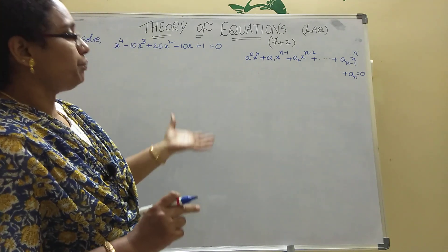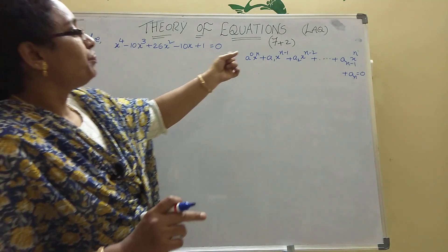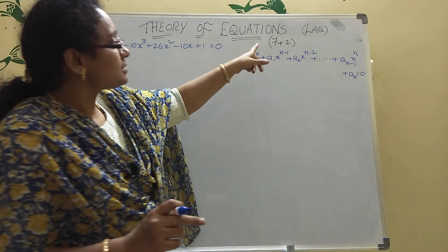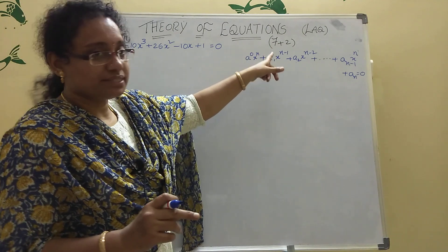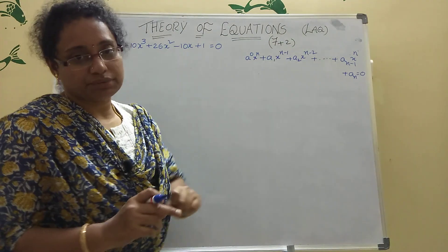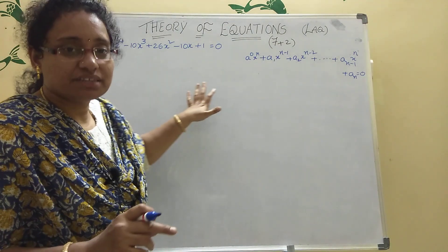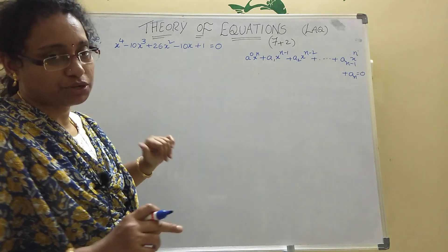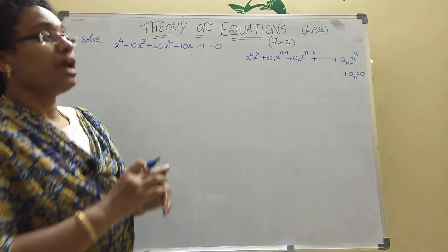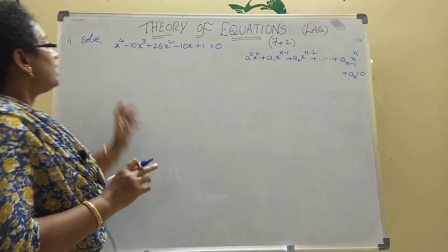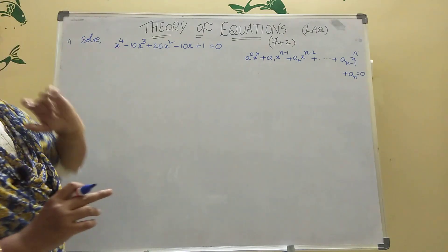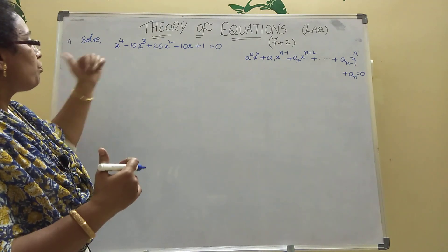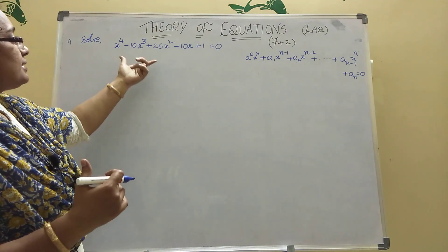State and CBC is also very important. Here, LAQs — how many sums are there? 7 marks, 1 sum; 2 marks, 1 sum will come. Total weight is 9 marks. Then here, solve problems are there. 7 marks problems — what type will come? Solve problems will come.